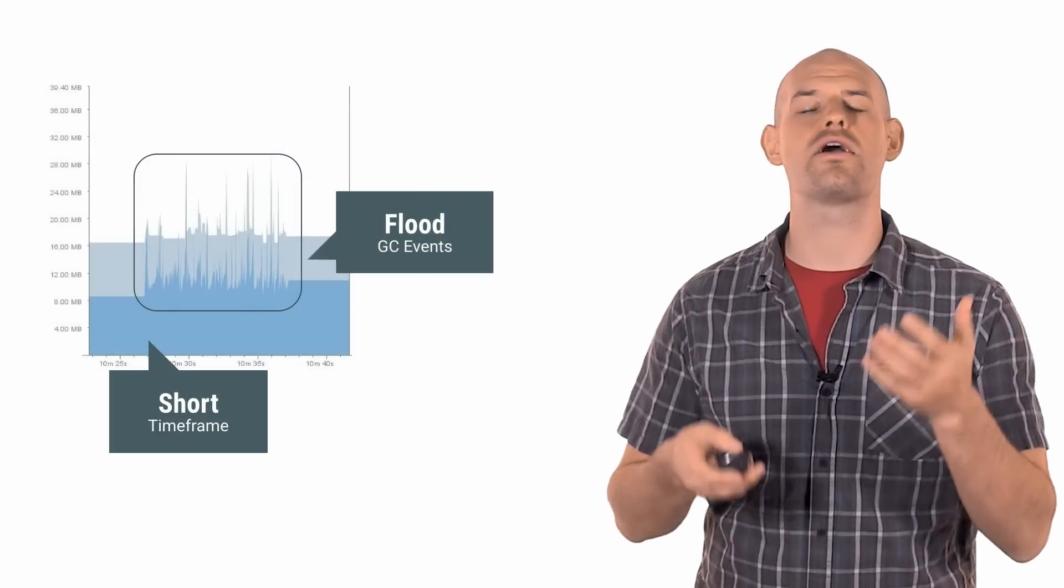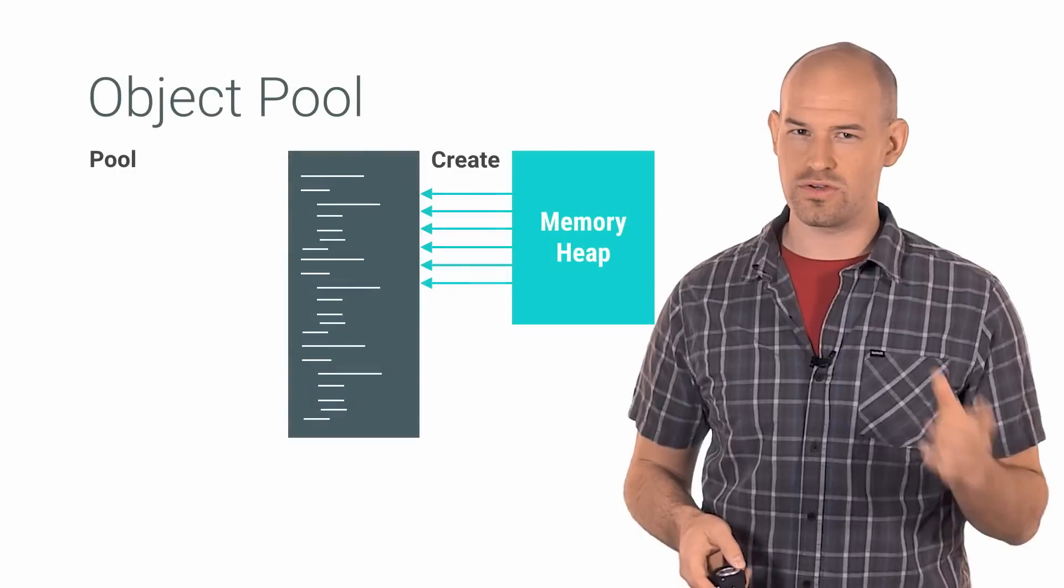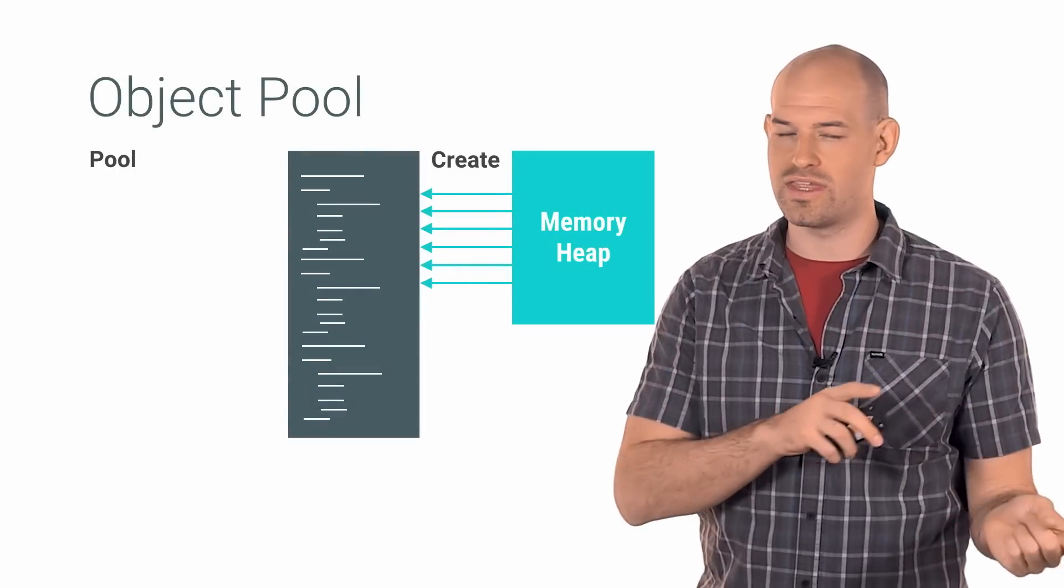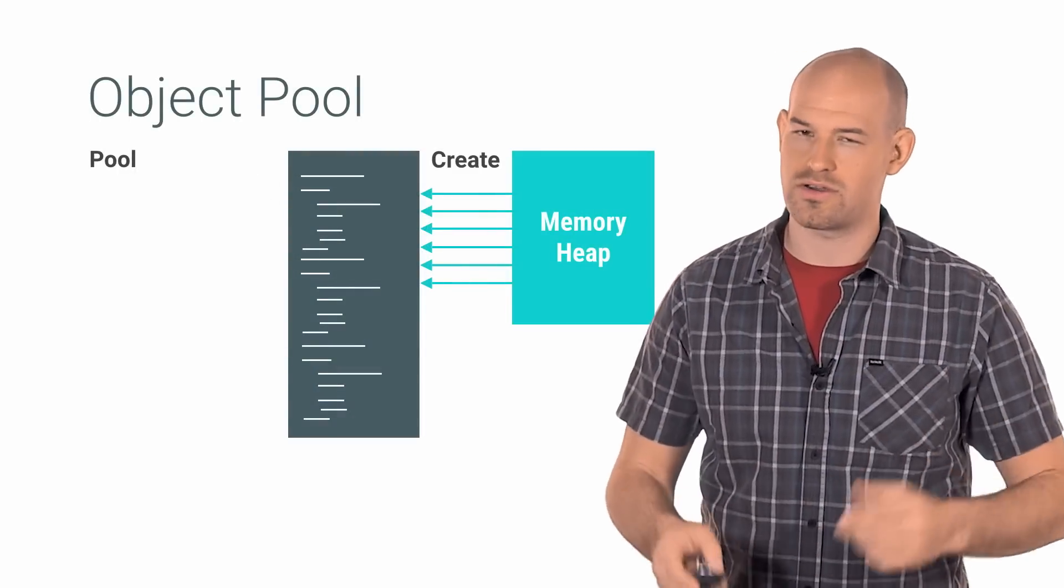When this happens on a regular basis, you end up getting a horde of GC events that occur at a great frequency. But thankfully, there's a way to get the same functionality of the allocation and freeing of objects without the GC events, and it's called an object pool.